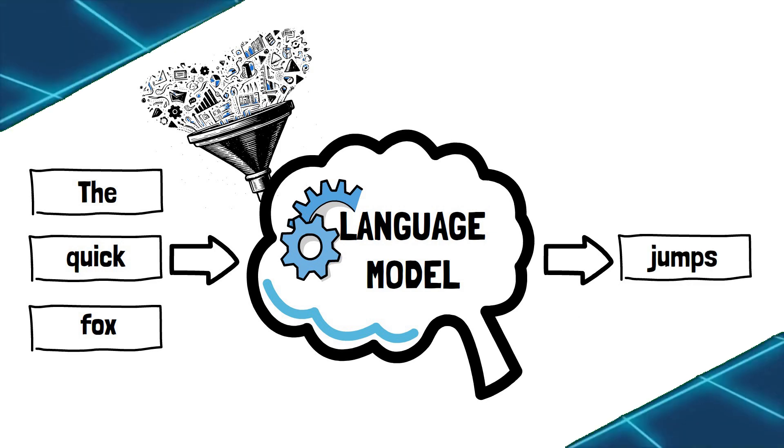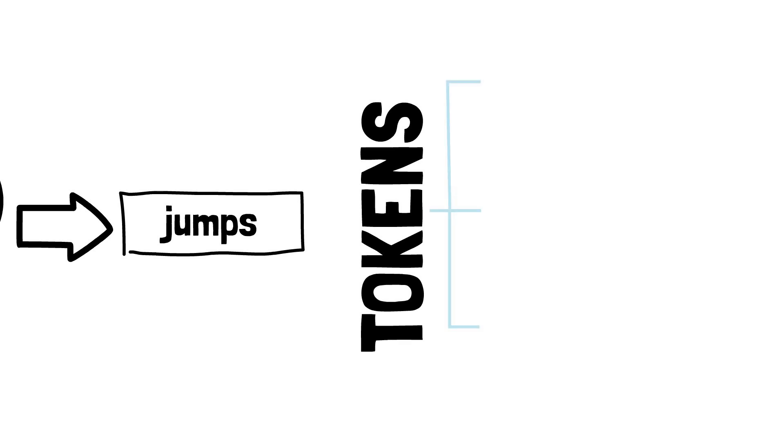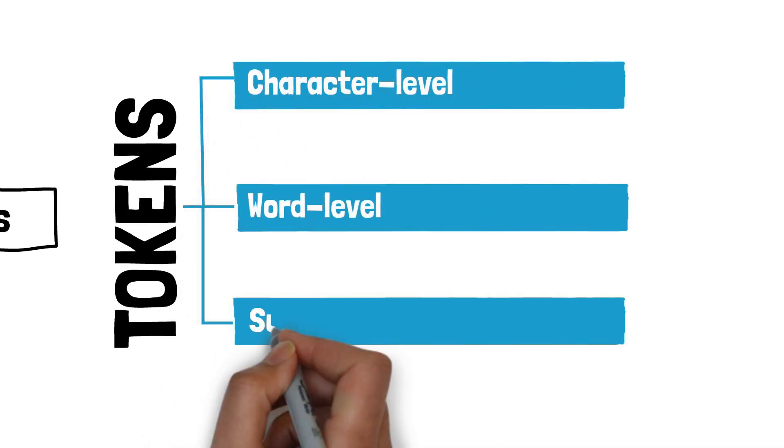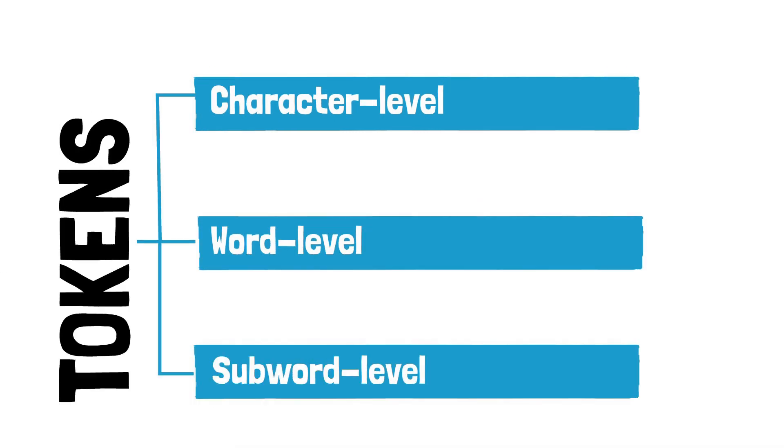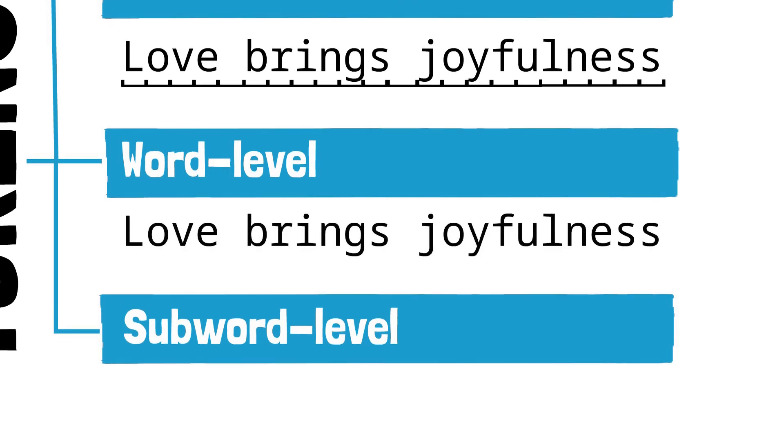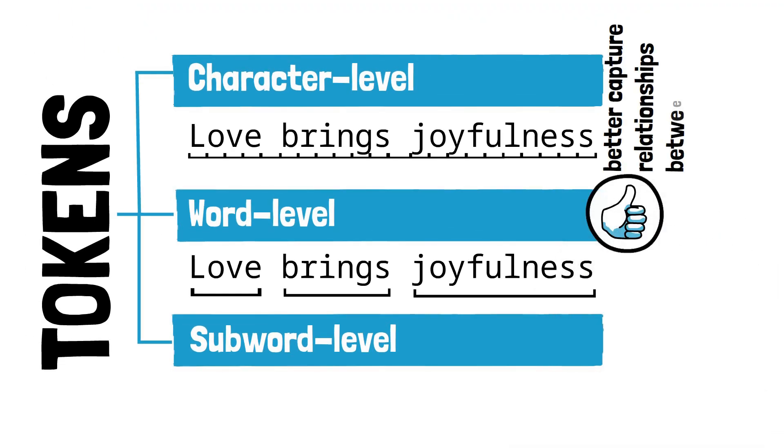Let's now look at how we represent tokens in a language model. A token can be a character, an entire word, or even part of a word. When tokens are represented as individual characters, the model processes text letter by letter. On the other hand, word-level tokenization breaks down text into individual words. This is less granular but can capture relationships between words more effectively.